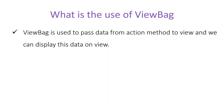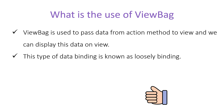First of all, let's understand what is the use of ViewBag. ViewBag is used to pass data from one action method to its corresponding view, and we can display that data on the view. In very simple terms, ViewBag is used to pass any data from an action method to the corresponding view. This type of data binding is known as loosely binding.